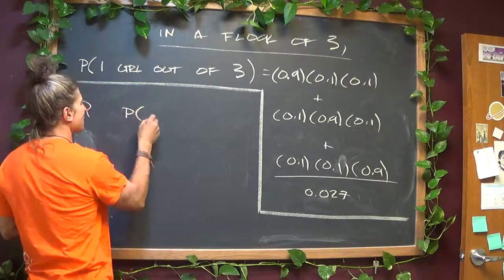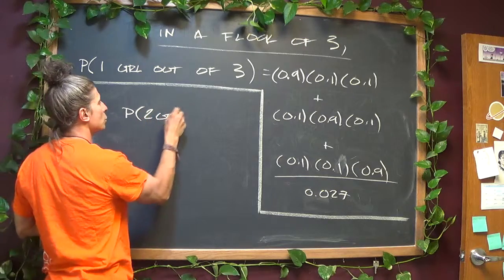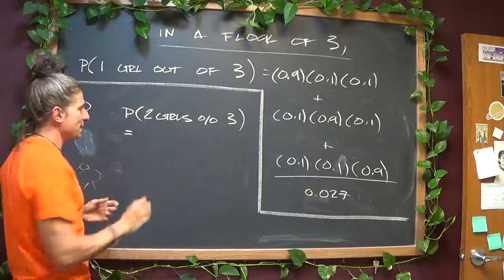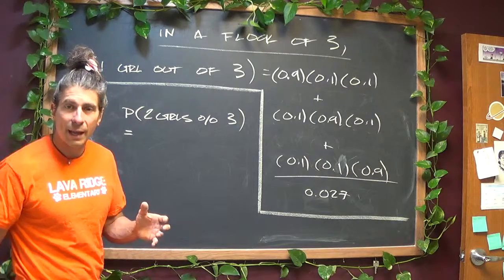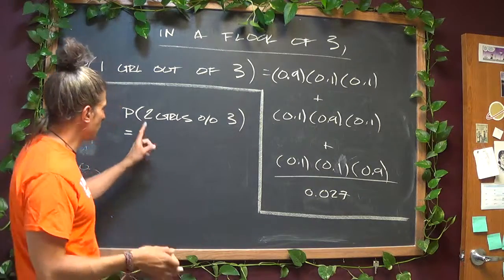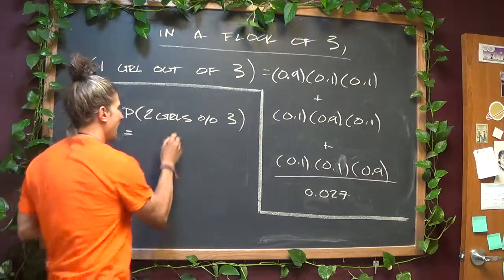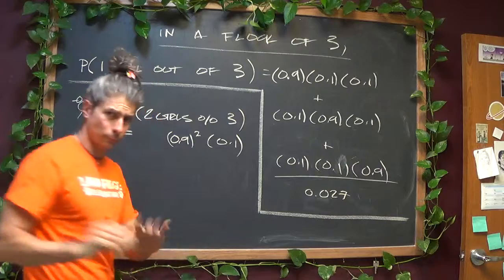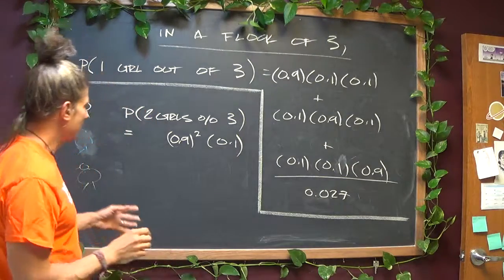So I think we can utilize the same logic, two girls out of three. I think we can utilize the same logic by just saying, okay, in all of the cases where I want two girls out of three, I'm going to have two 0.9s and a 0.1, all those cases.